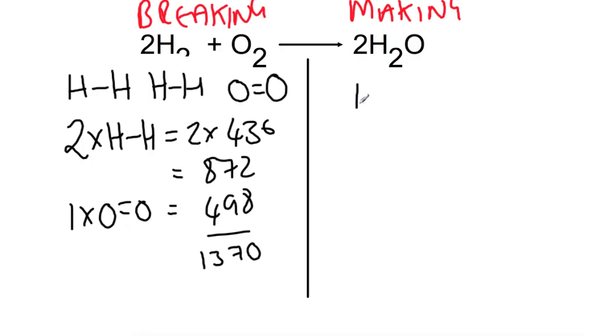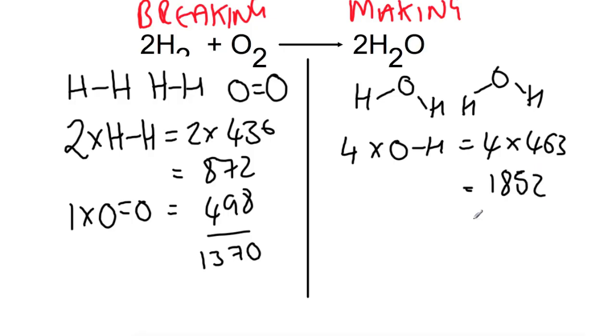The bonds that we're making, we're making two molecules of water. So you can see that we're making a total of four bonds there and they're all the same. So we're making four times O-H bonds. Each O-H is worth 463 kJ. So that's a total of 1852 kJ being released because it's exothermic.